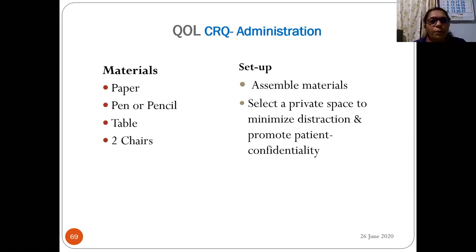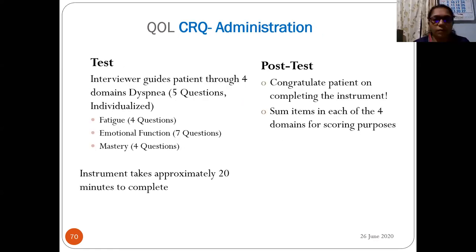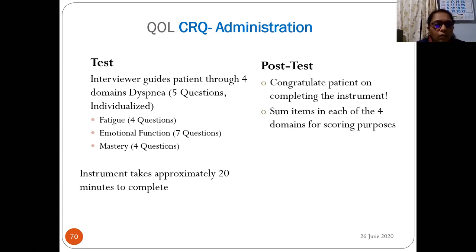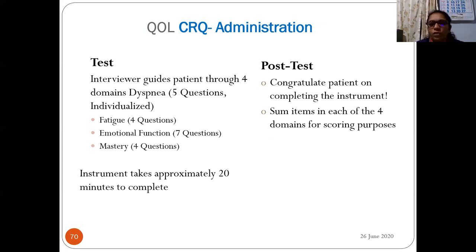Materials: paper, pen or pencil, table, two chairs, private space to minimize distraction and promote patient confidence. The interviewer guides patients through four domains: dyspnea (five questions, 35 points), fatigue (four questions, 28 points), emotional function (seven questions, 49 points), and mastery (four questions, 20 points). The instrument takes approximately 20 minutes to complete. The four domain scores remain separate — higher scores indicate better quality of life; lower scores indicate worse health-related quality of life.